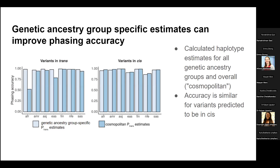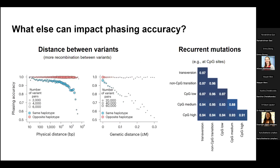We calculated haplotype estimates for all genetic ancestry groups — the overall being a cosmopolitan score. Accuracy is similar for variants predicted in cis, but for variants predicted in trans, we recommend using the group-specific genetic ancestry estimates when possible. Two major factors that can impact phasing accuracy are: the distance between the variants, since recombination can disrupt haplotypes; and recurrent mutations, which can affect the genetic relationship between variants if they arise independently multiple times in the population.